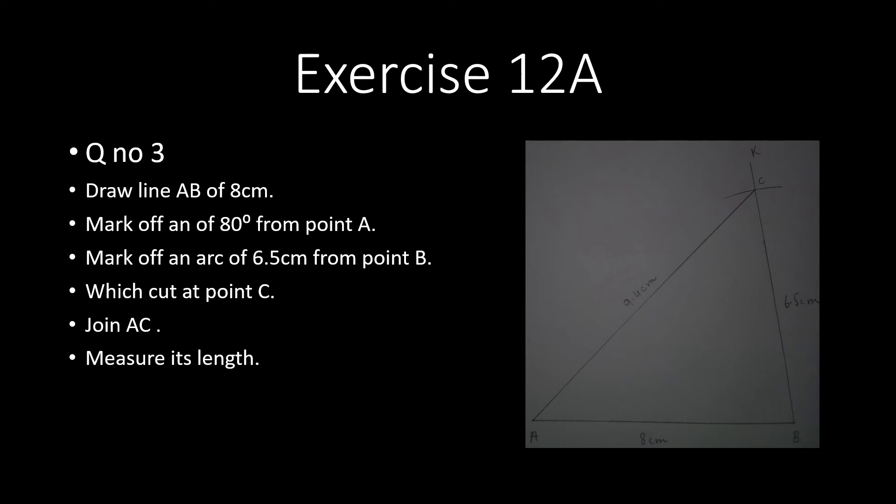Now we will consider question number 4. Here we also draw an angle ABC and mark an angle of 90 degrees at point A, just like question number 3. First, draw AB, then draw an angle of 90 degrees at point A.